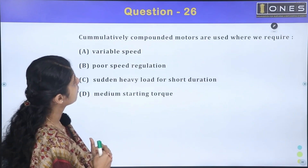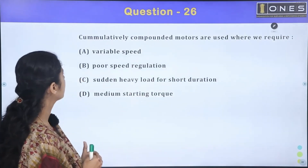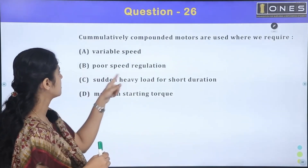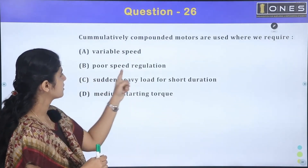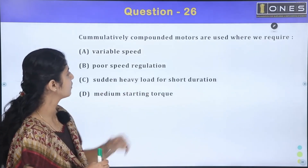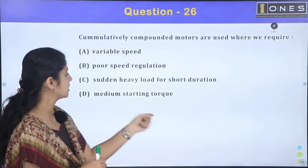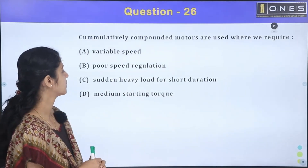Cumulatively Compound Motors are used where we require variable speed, poor speed regulation, sudden heavy load for short duration, and medium starting torque.